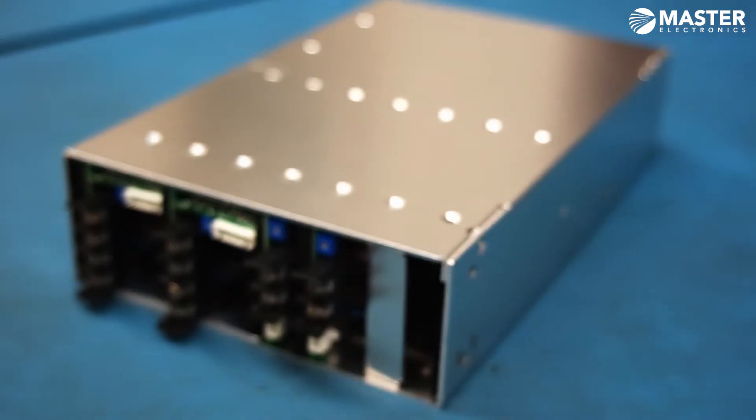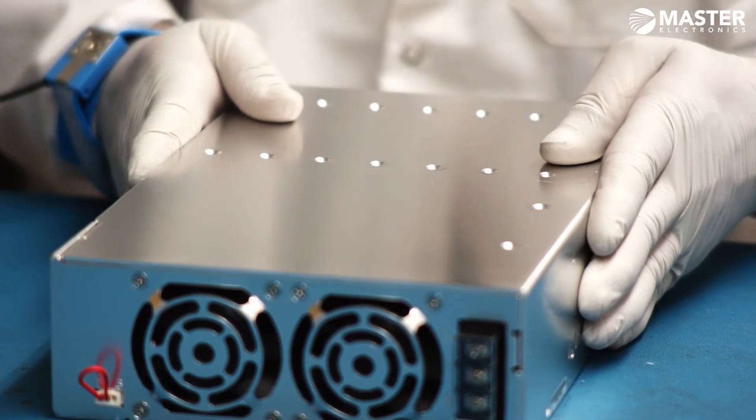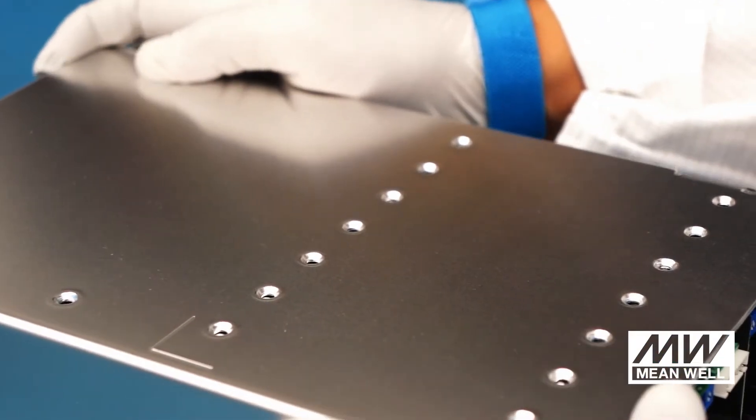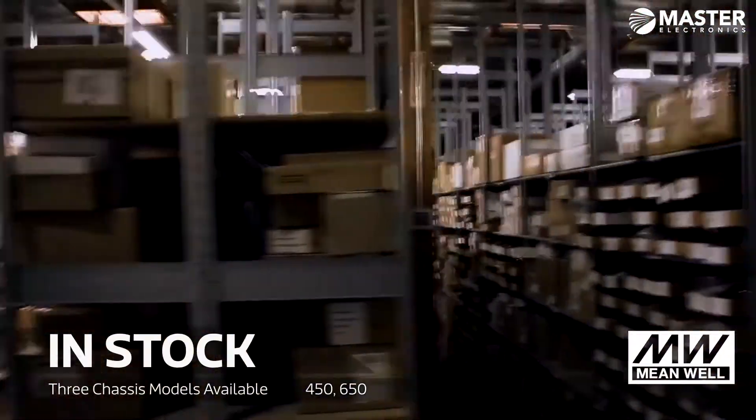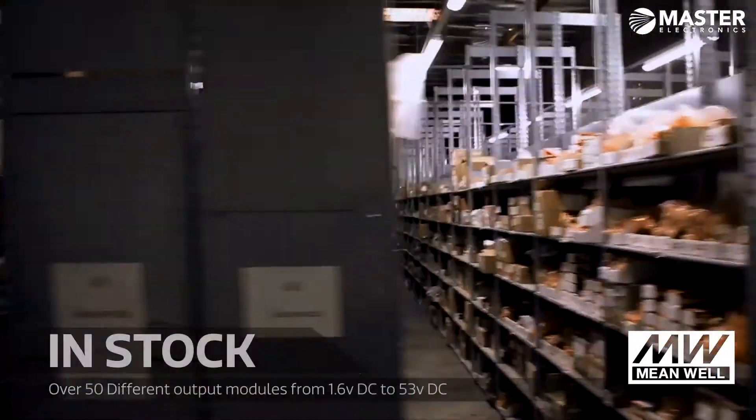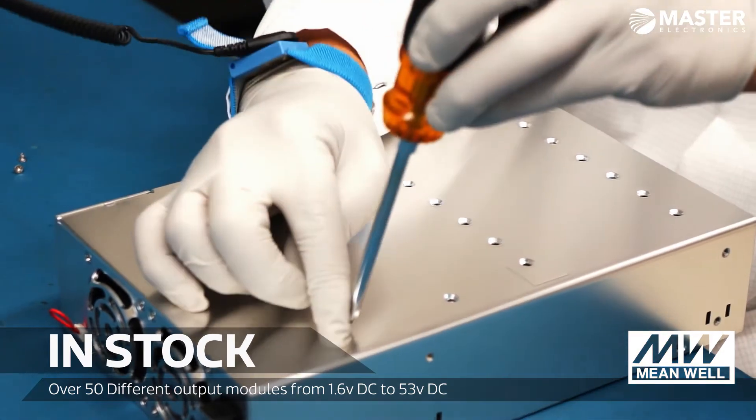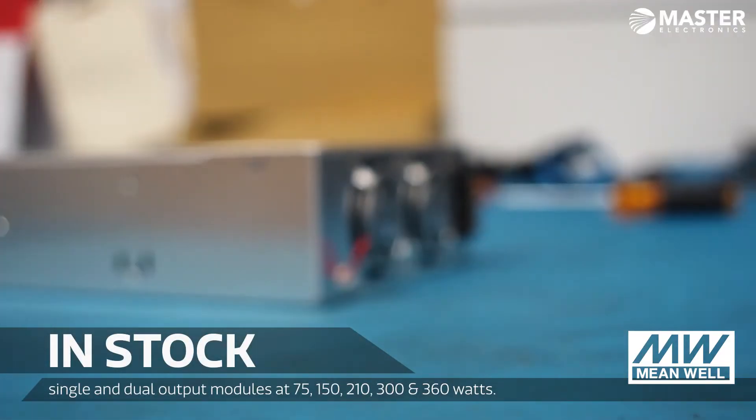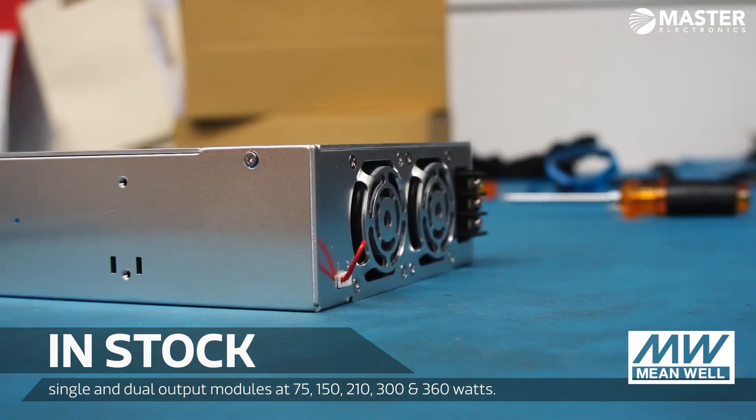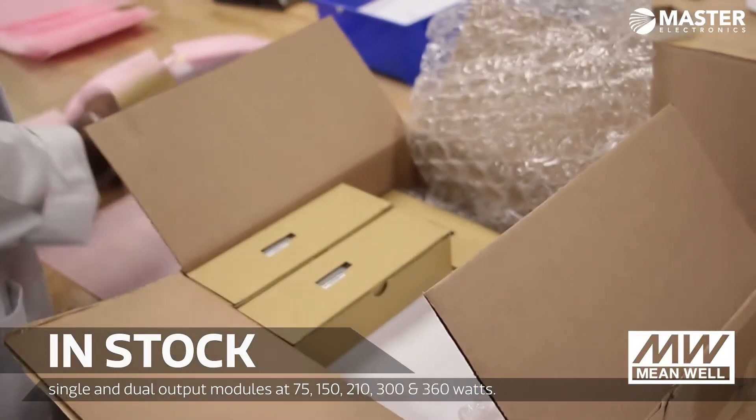We are the only authorized and certified by UL distribution integrator of the Meanwell modular power systems. We stock three different chassis models: 450, 650, and 1000 watts, in over 50 different output modules from 1.6 volts DC to 53 volts DC, single and dual output modules at 75, 150, 210, 300, and 360 watts.